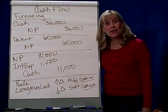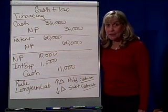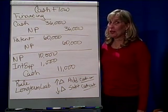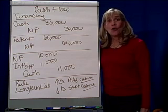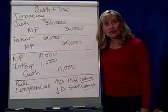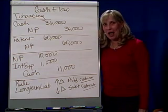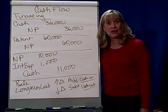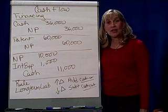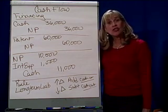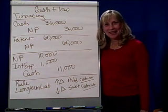In financial accounting, we're talking about the statement of cash flows. We've talked about the operating section and the cash that comes in or goes out due to daily operations. We've talked about the investing section, changes in our non-current asset accounts, and how cash flows in and out due to investing activities. Now we're going to take a look at the financing activities, in particular, changes in our long-term liabilities, or our non-current liabilities.